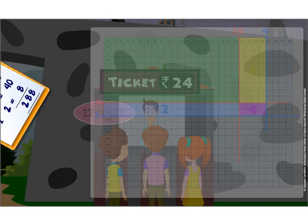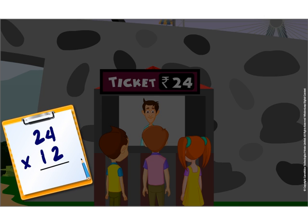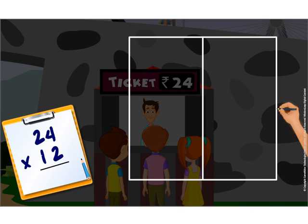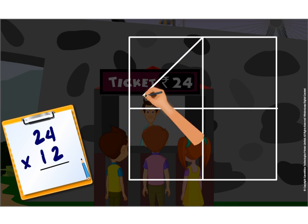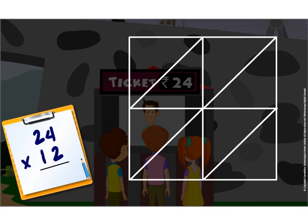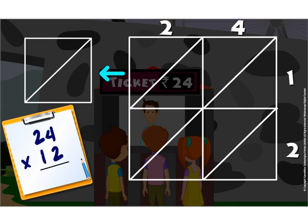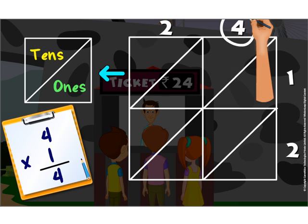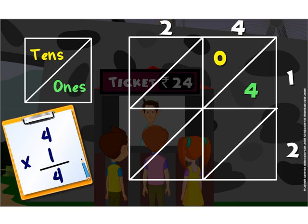Let us verify this using another method called the lattice method. For this, draw a square and draw two lines joining the midpoints of the opposite sides. Now draw a diagonal across each of these 4 smaller squares. Let us begin by writing one number on the top and another on the right side as shown. We write the 10s part of the number here and the 1s part here. We start by multiplying two numbers which match up for a box. Here, 4 into 1 is 4.